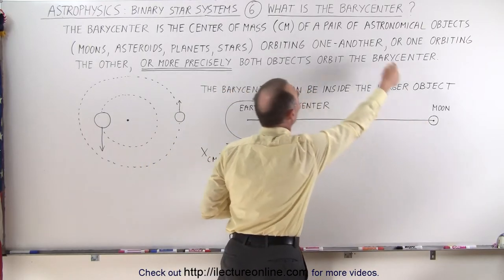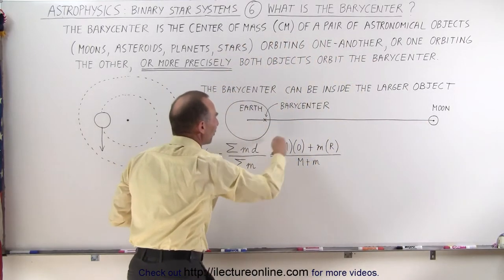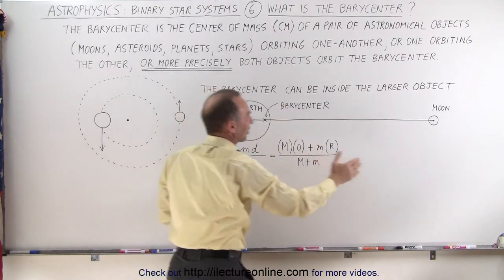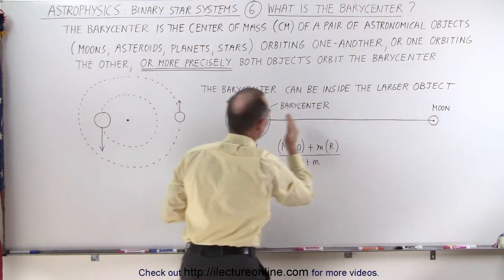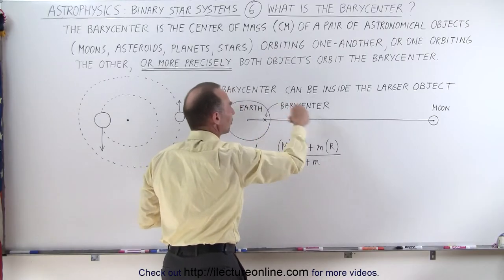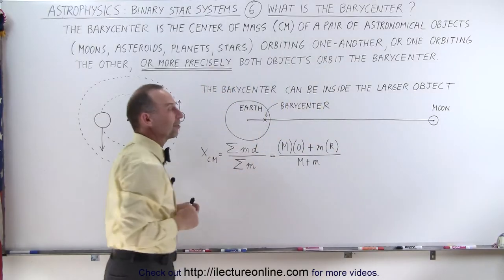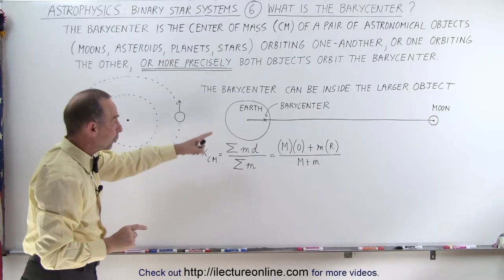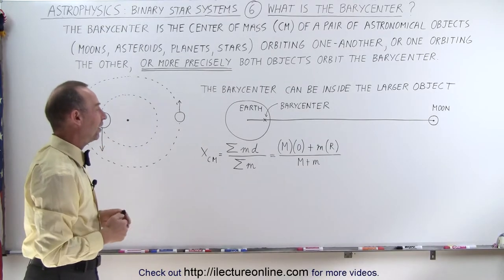As the Moon orbits the Earth, the Earth orbits the barycenter. Or, I should say, as the Moon orbits the barycenter, so does the Earth, so the Earth makes small circles as the Moon goes around the barycenter. Let's calculate where that location is, and this is how it's done.